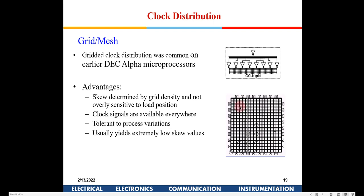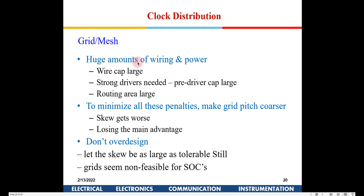The grid topology is relatively tolerant to process variations. Thick wires are used and one full layer — or actually two layers — are required: one for horizontal and one for vertical routing. Wherever required, vias bring the signal down to the flip-flops. This gives extremely low skew values, and it is used in the DEC Alpha microprocessor.